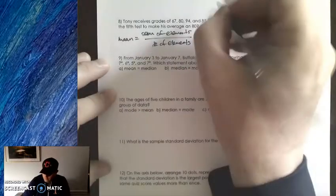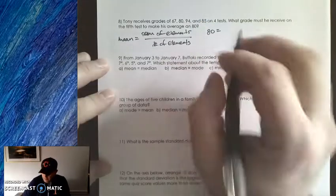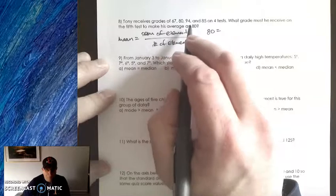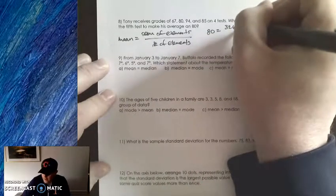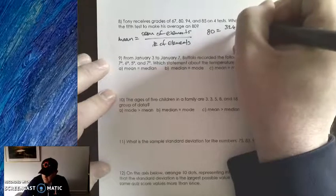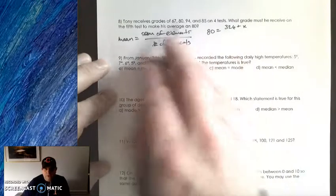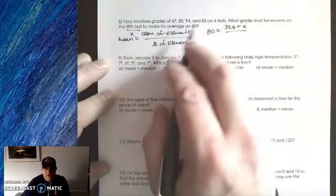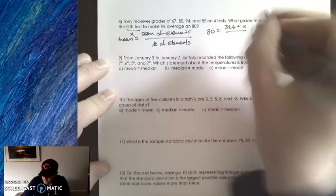We know that the mean is equal to the sum of the elements divided by the number of elements. What's my mean? The mean that we're looking for is 80. So 80 equals the sum of the elements. What elements do we have right now? 67, 81, 94, and 85. If I add up those four numbers, I'm going to get 326. But there's a fifth test, a fifth grade. We don't know what that grade is yet. We're trying to figure that out. So that is going to be my X. So this 326 is these four numbers added up plus X, which is that fifth test. And we're going to divide it by the number of elements. In this case, there are five elements.